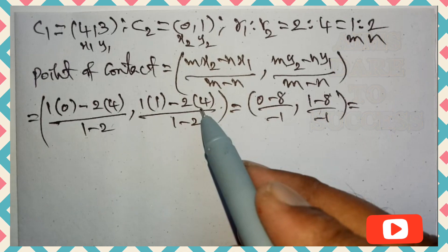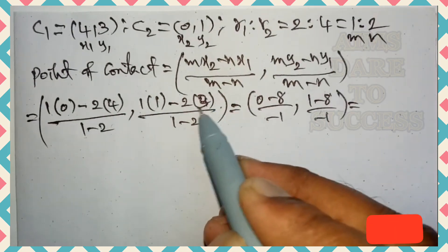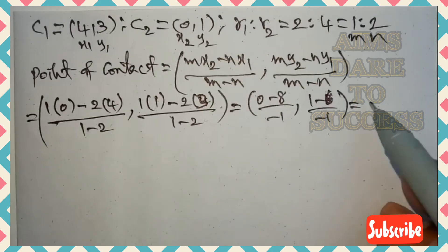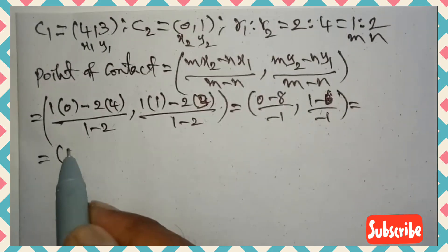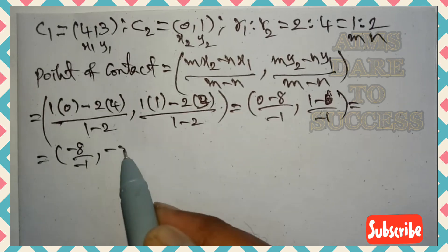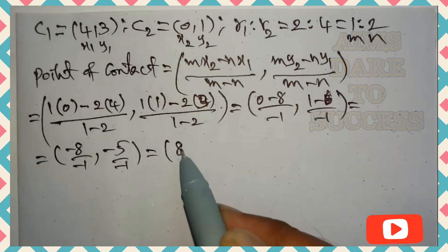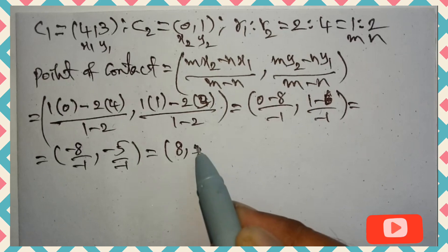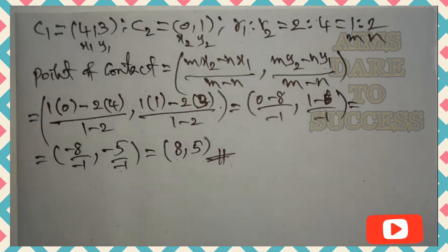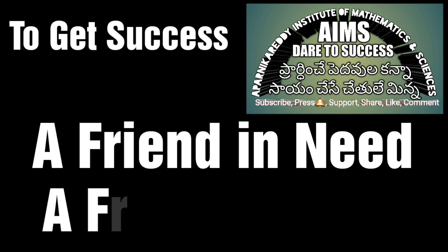So −8 divided by −1 gives 8, and −5 divided by −1 gives 5. Therefore, the point of intersection of the two common tangents is (8, 5).